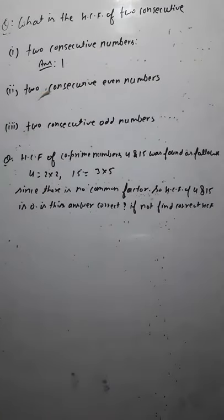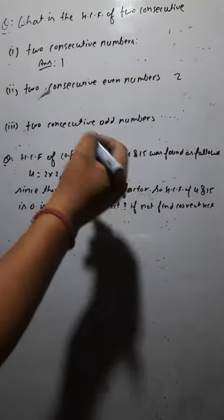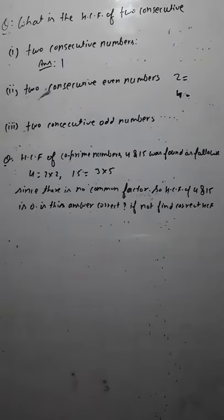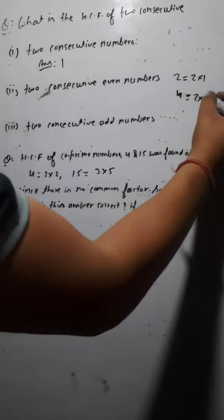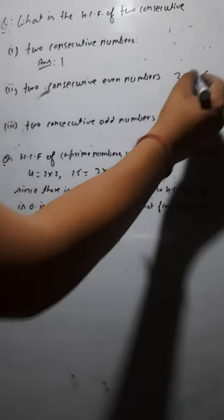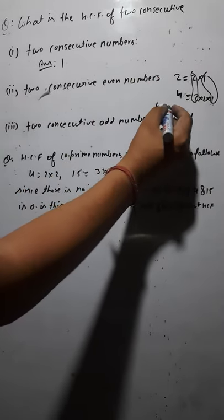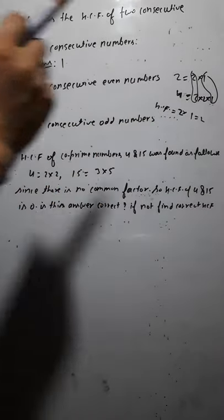Now moving to the next question: HCF of two consecutive even numbers. If you take two consecutive even numbers — first even number is two and after two, the second consecutive even number is four. Let's find out their HCF. Prime factorization of two gives two × one = two. Prime factorization of four gives two × two × one = four. Now the common factors are two and one. So HCF = two × one = two. If you take two consecutive even numbers, HCF will be two in each case.